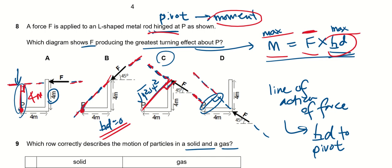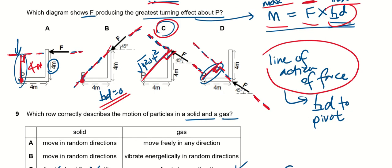So far C is the correct answer, but let's look at D. For D, you extend the line of action of the force, and you'll find that this is the perpendicular distance to the pivot, and definitely this is smaller than C. So C is the correct answer. To answer this question, you need to know how to draw your line of action of the force, and from there on you can determine what is the perpendicular distance to the pivot.